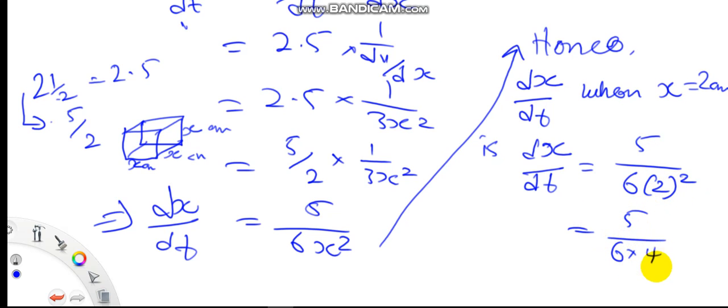2 squared is 4, so this will be 6 times 4 which is 24. So 5 over 24.